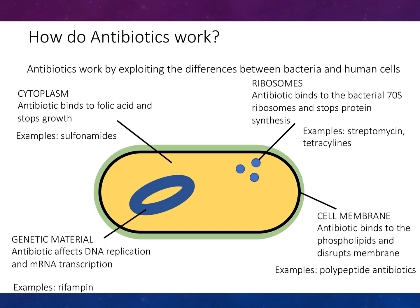How do antibiotics exploit the differences between bacteria and human cells? With regards to cytoplasm, antibiotics bind to folic acid and stop growth — an example would be sulfonamides. For ribosomes, the antibiotic binds to the bacterial 70S ribosomes and stops protein synthesis; examples include streptomycin and tetracyclines. For genetic material, the antibiotic affects DNA replication and mRNA transcription, such as rifampin. And then antibiotics that attack the cell membrane are known as polypeptide antibiotics, in which the antibiotic binds to phospholipids and disrupts the membrane.